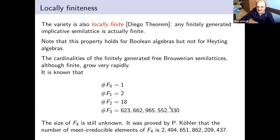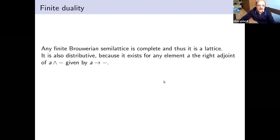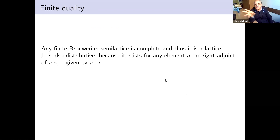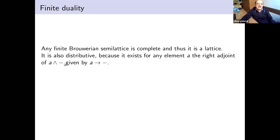The cardinalities of finitely generated free Brouwerian semilattices — or implicative semilattices, two names for the same thing — grow very rapidly. With three generators it is already something unbelievable, so there is no way to really compute all elements, but it is still finite. A finite implicative semilattice is complete, hence a lattice, and also distributive because conjunction preserves joins.